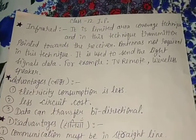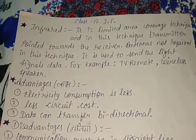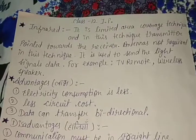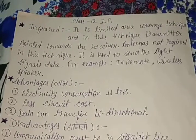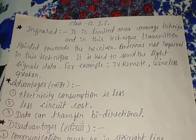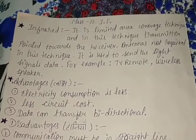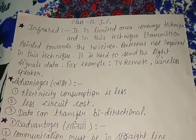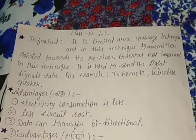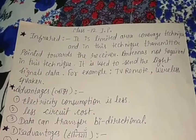Infrared rays work in a limited area. Light signals have to travel from one place to another. The transmitter sends a light signal, and the receiver — which is like a bulb or light source — catches those signals.